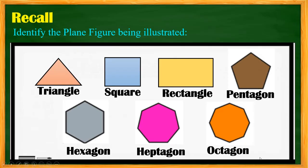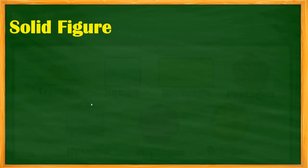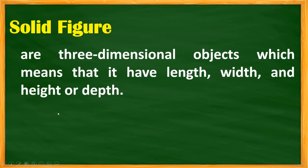Figure 6 is heptagon and figure 7 is octagon. So these are the plane figures: triangle for a 3-sided polygon, square and rectangle for 4-sided polygons, pentagon for 5-sided, hexagon for 6-sided, heptagon for 7-sided, and octagon for an 8-sided polygon. Now let's define a solid figure. A solid figure is a three-dimensional object, which means it has length, width, and height or depth.